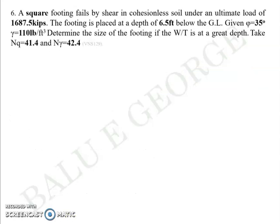Next question: you have a square footing that fails by shear in cohesionless soil under an ultimate load of 1687.5 kips. The footing is placed at a depth of 6.5 feet below the ground level, and the soil has an angle of internal friction of 35 degrees and unit weight of 110 lbs per cubic feet. You are asked to determine the size of the footing if the water table is at a great depth. Take Nq as 41.4 and Nγ as 42.4. This question uses non-SI units, but it's still an engineering problem to find the dimension of the square footing.